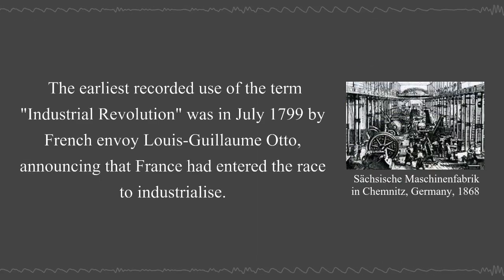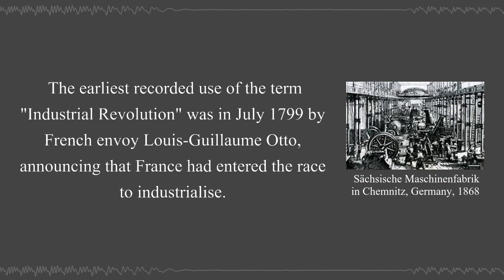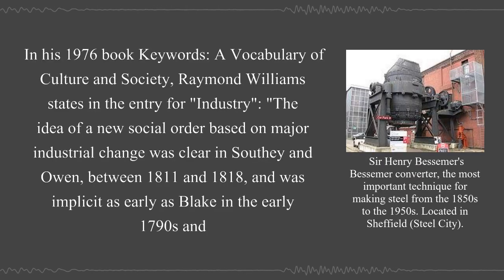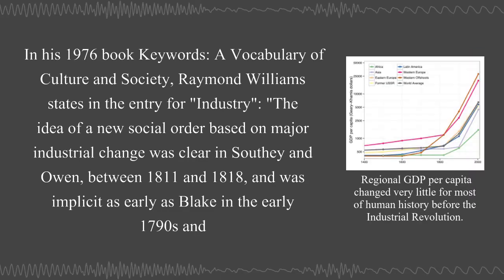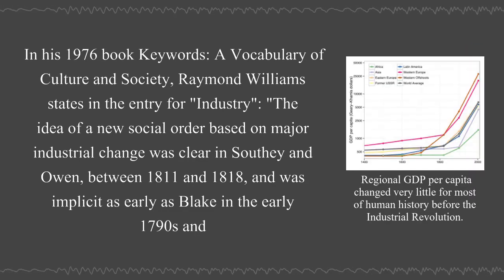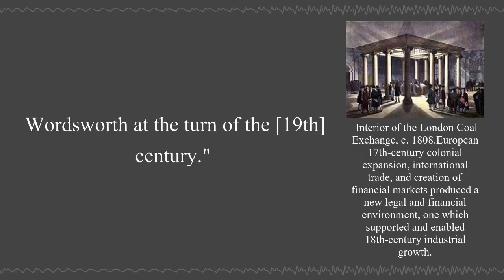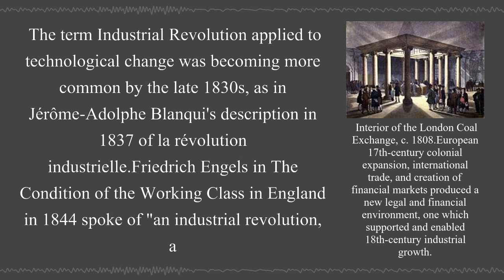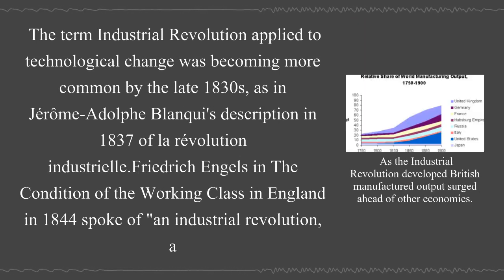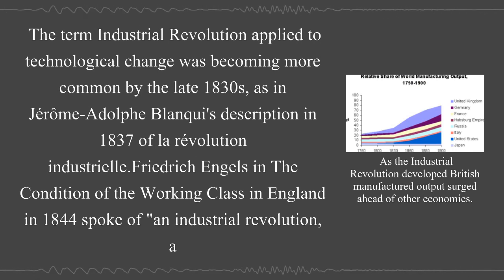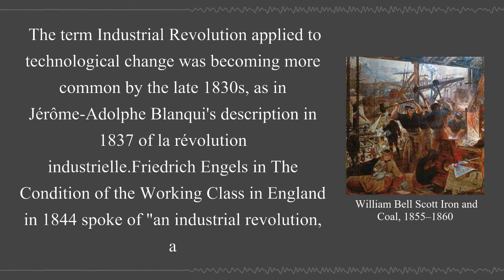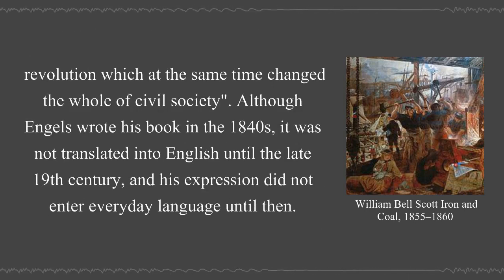The earliest recorded use of the term 'Industrial Revolution' was in July 1799 by French envoy Louis-Guillaume announcing that France had entered the race to industrialize. In his 1976 book Keywords, Raymond Williams notes the idea of a new social order based on major industrial change was clear in Southey and Owen between 1811 and 1818, and implicit as early as Blake in the early 1790s. The term became more common by the late 1830s, and Friedrich Engels in The Condition of the Working Class in England in 1844 spoke of 'an industrial revolution, a revolution which at the same time changed the whole of civil society.'